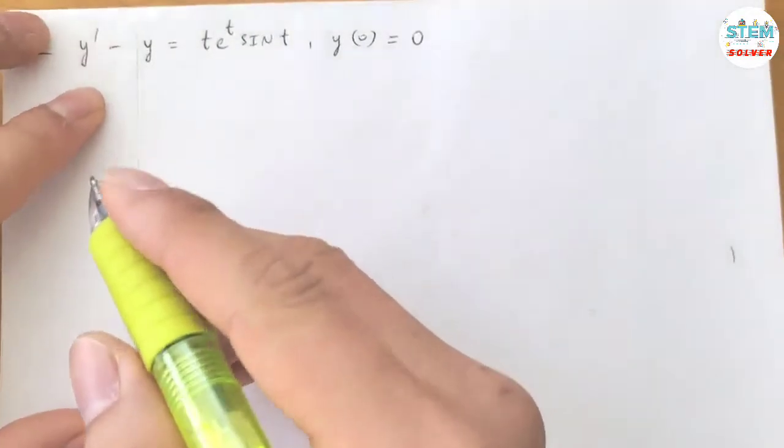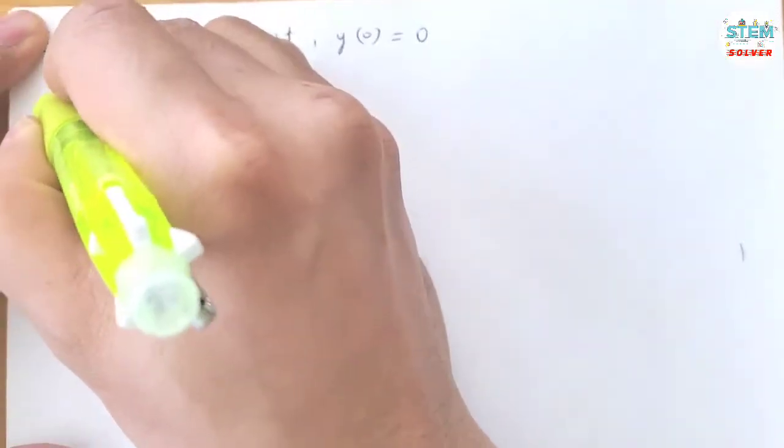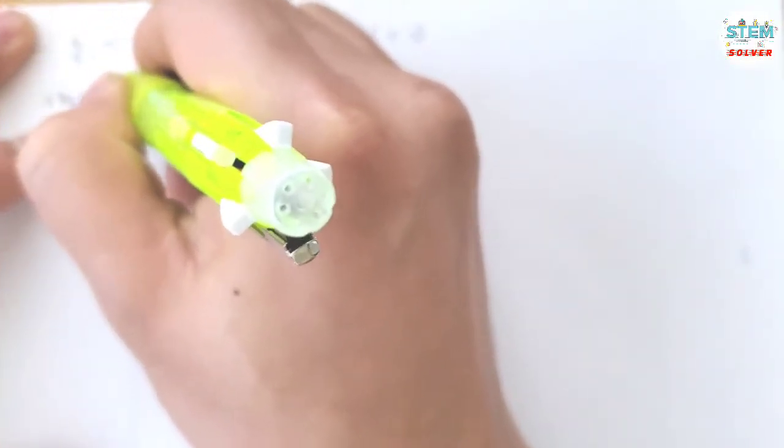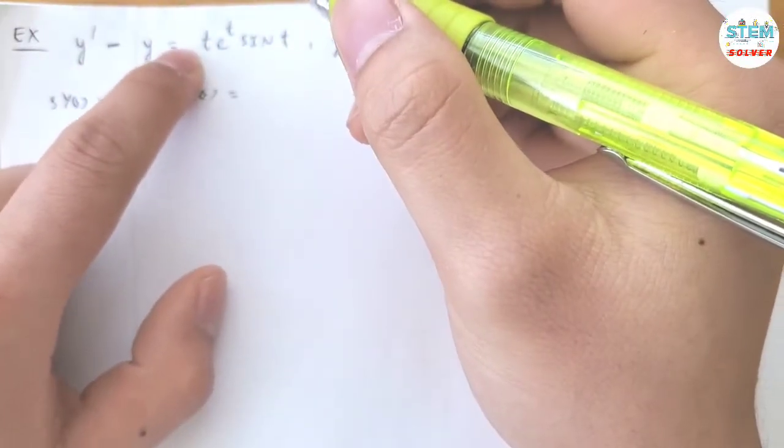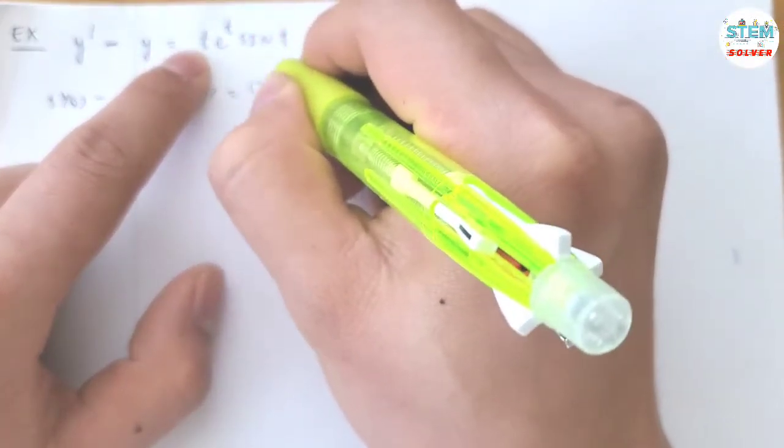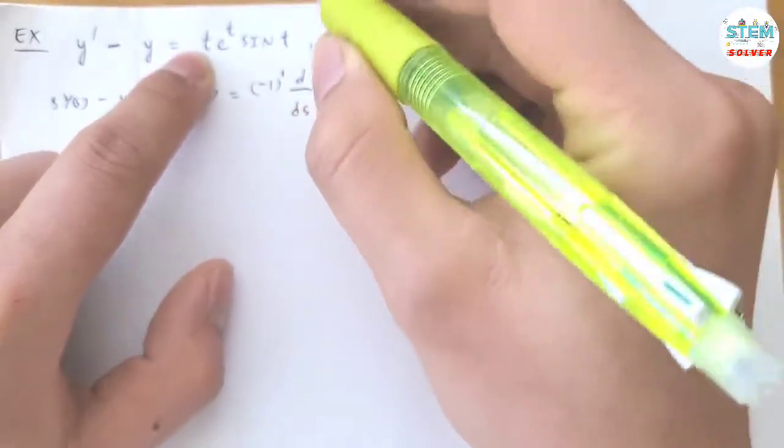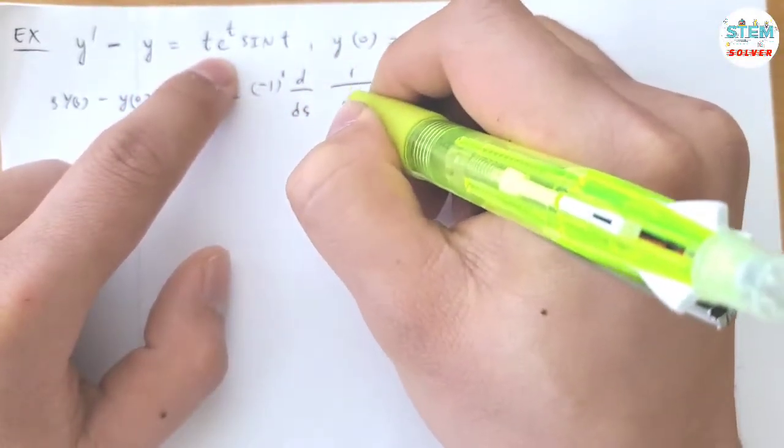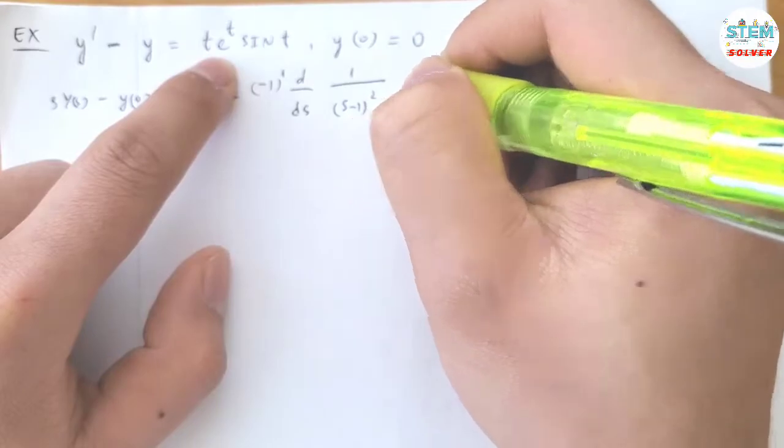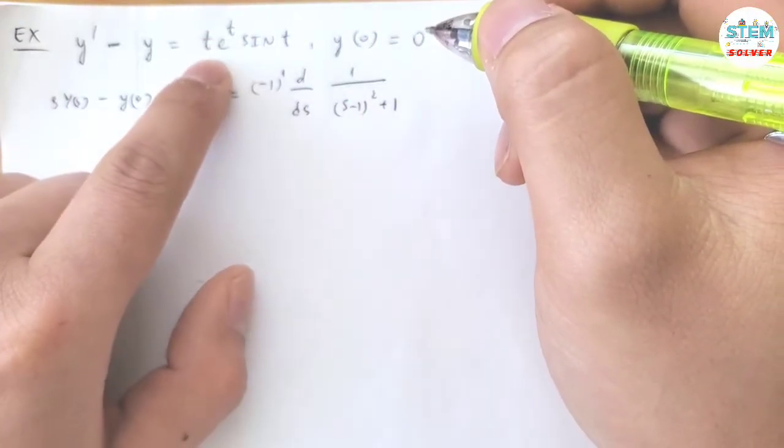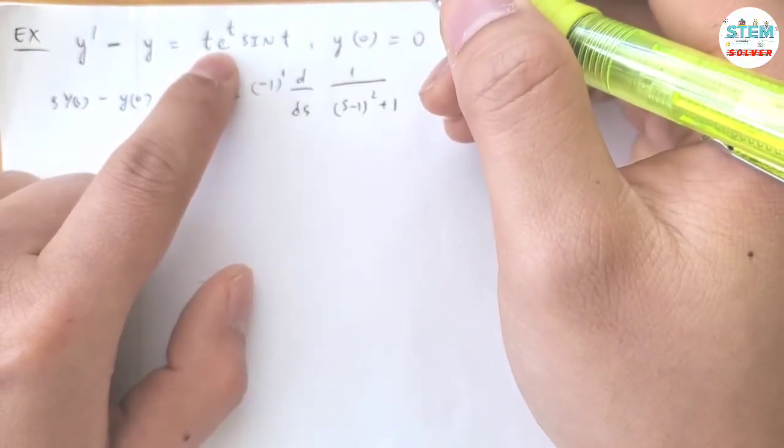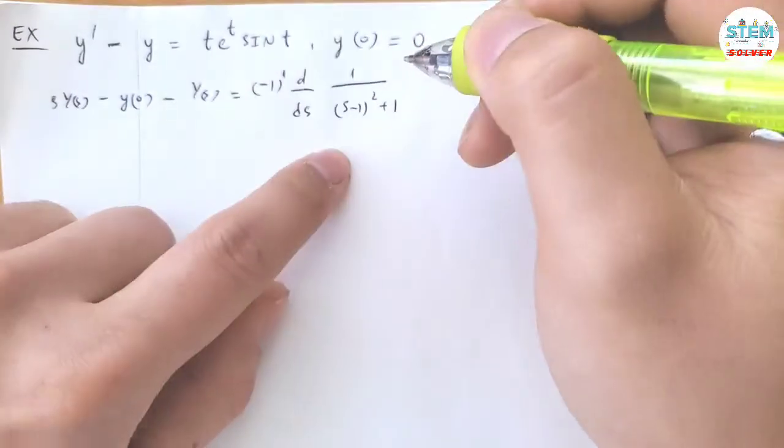To use the Laplace transform, apply the Laplace transform on both sides. I have s times capital Y of s minus y of 0 minus capital Y of s equals the Laplace transform of this one. I have negative 1 to the first power, the first derivative of 1 over s minus 1 square plus 1. So you have the derivative of sine, 1 over s square plus 1, and you have the translation here. So you have to have negative 1 for s.